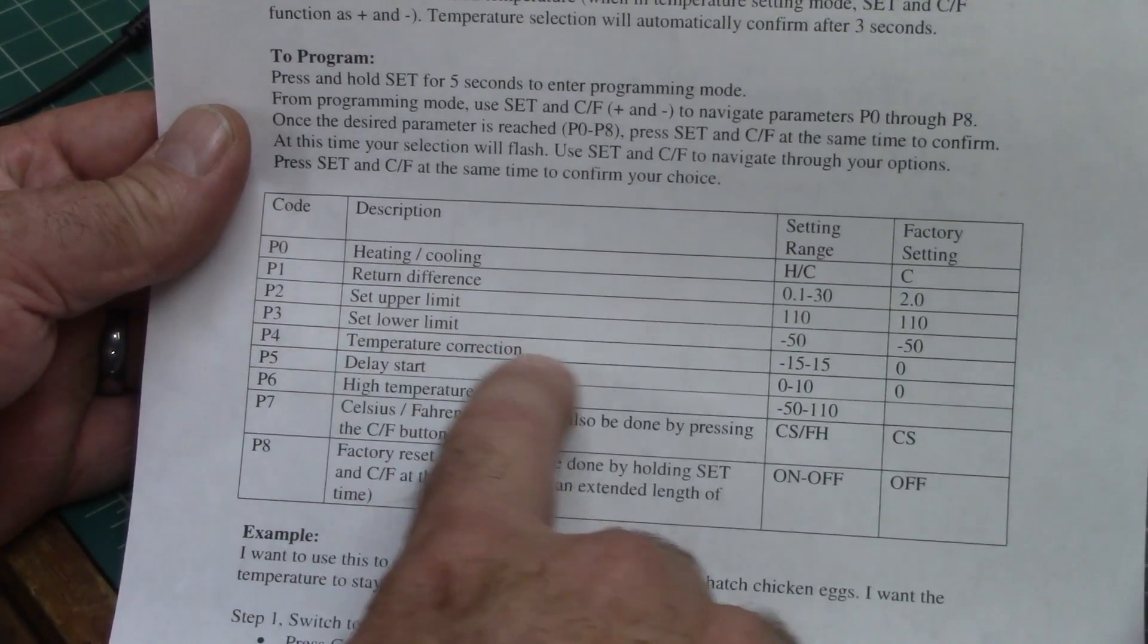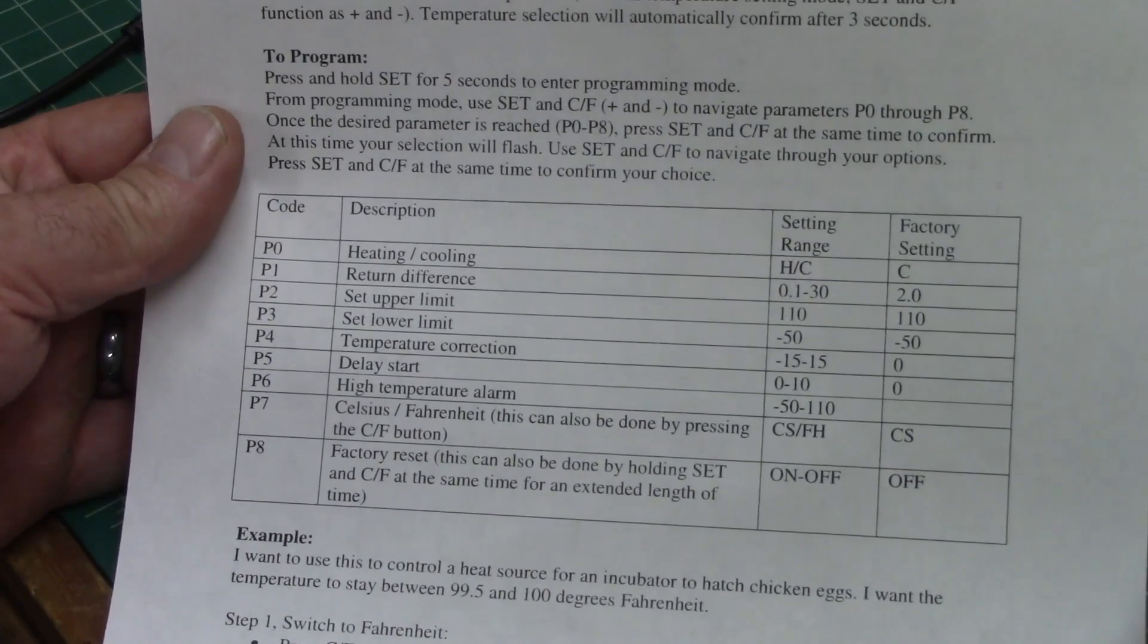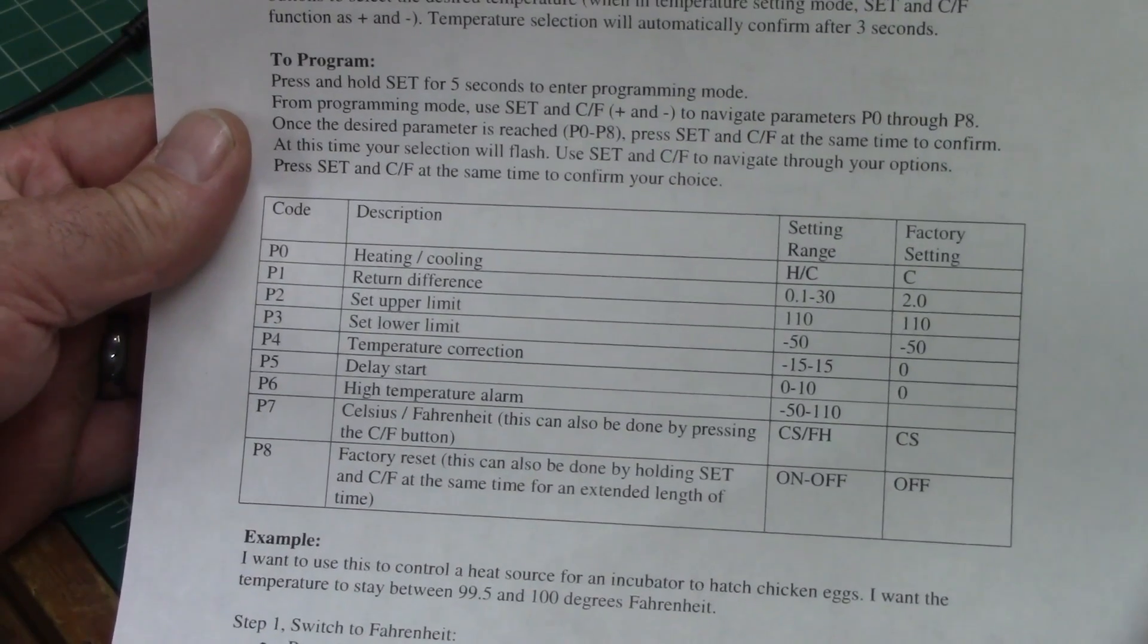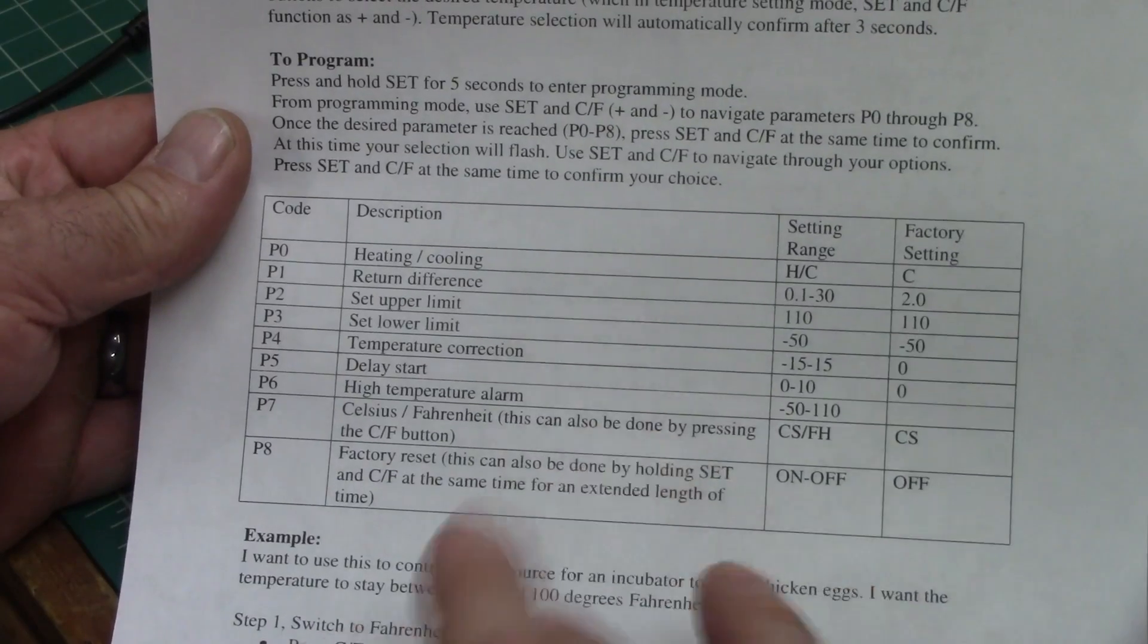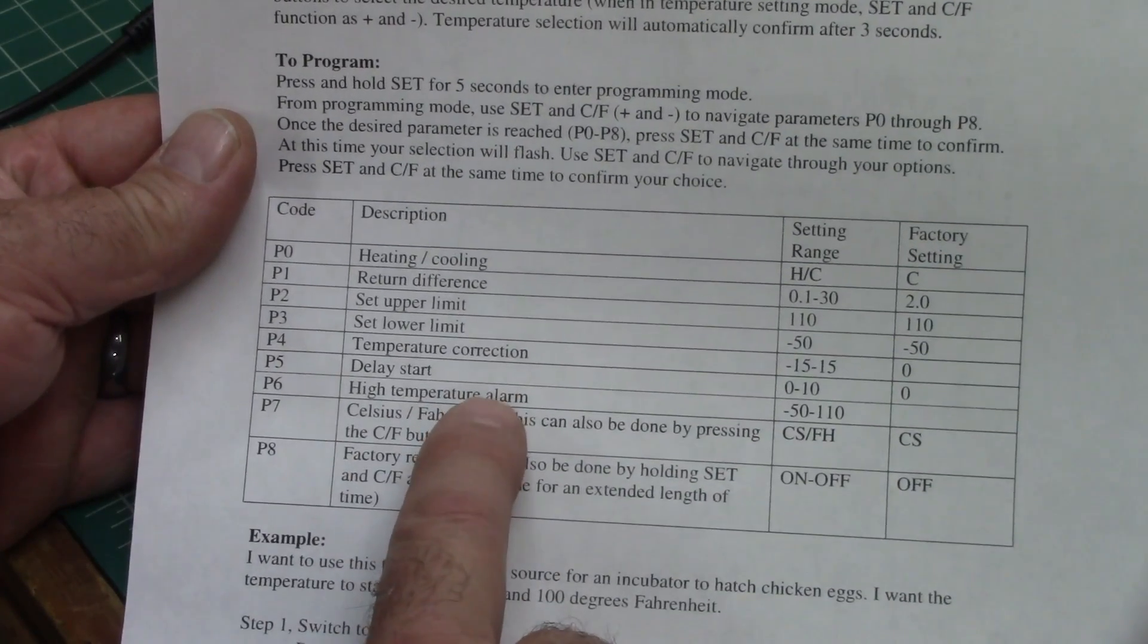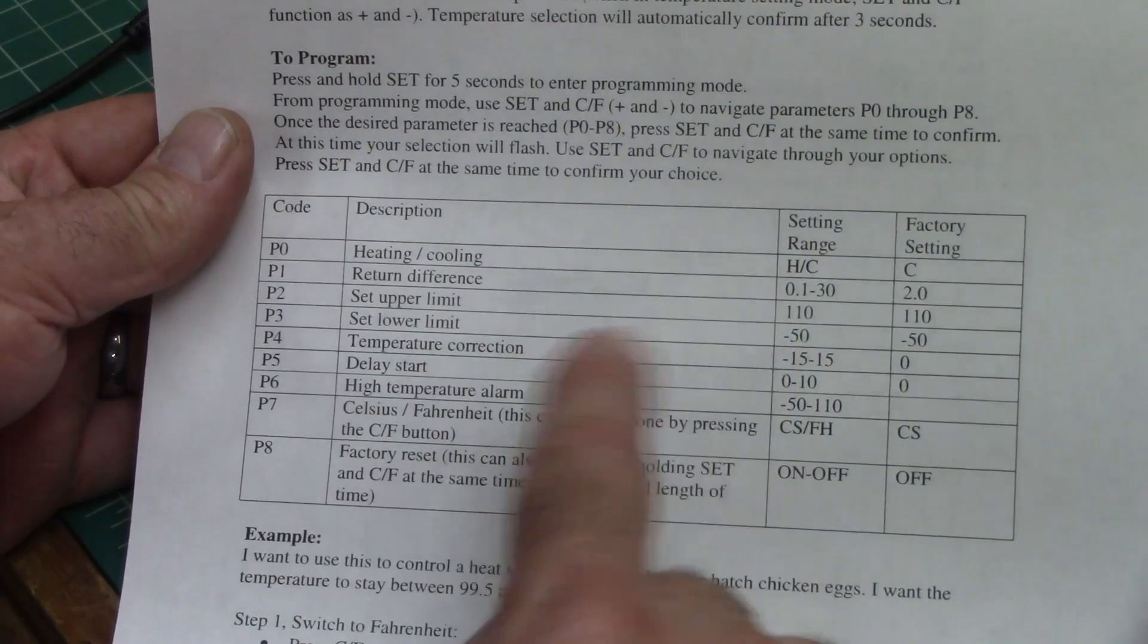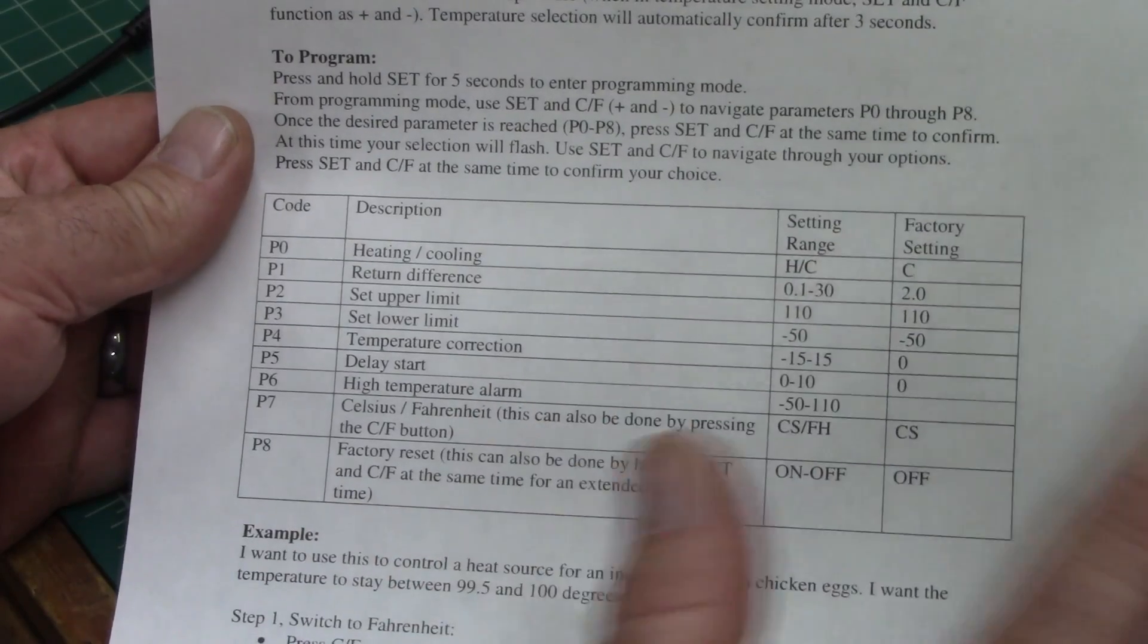P4 is temperature correction. And that would be if you figure out that the thermostat isn't reading properly, you can tell it to adjust by a few degrees in order to make it correct. High temperature alarm, I believe that's where you can have it alarm if it gets too high or too low. I'm not real sure about those. I don't use them.